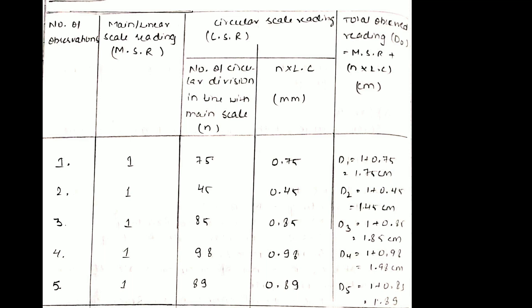The value of D1 was 1.75 centimeter, D2 was 1.45 centimeter, D3 was 1.85 centimeter, D4 was 1.98 centimeter, and D5 was 1.89 centimeter. After this we find out the mean diameter. The mean diameter of a thin wire using a screw gauge is found in the same manner as with vernier calipers. You add all the diameters obtained divided by the number of times you took the reading.